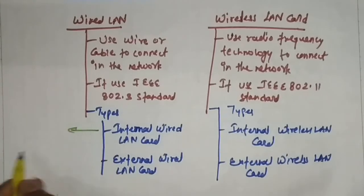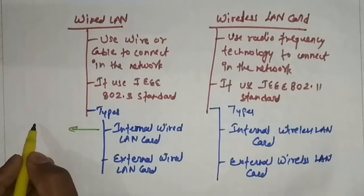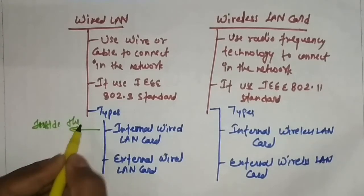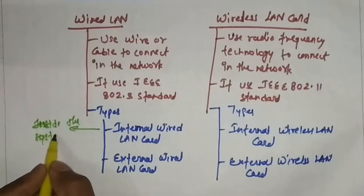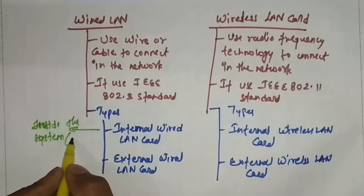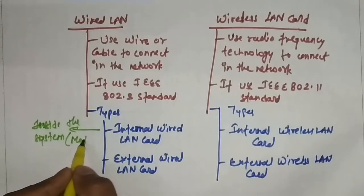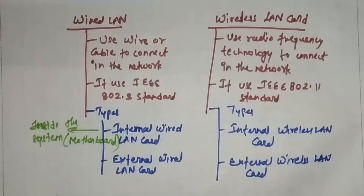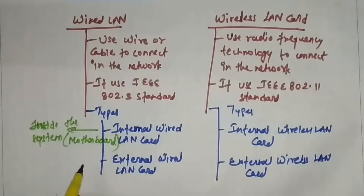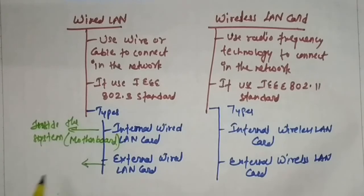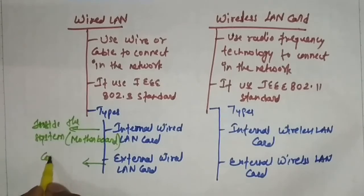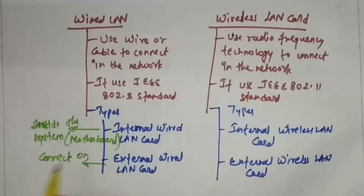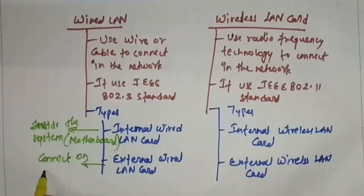The internal LAN card is inside the system — you can say it is inbuilt in the motherboard. The external LAN card connects from outside using USB cables.